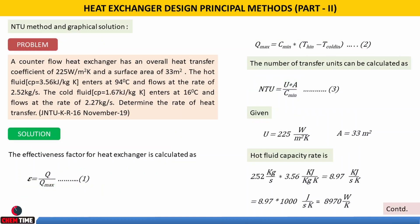Coming to the second problem, based on the NTU (Number of Transfer Units) method. A counter-current flow heat exchanger has an overall heat transfer coefficient of 225 W/m²·K and a surface area of 33 m². The hot fluid has specific heat 3.56 kJ/kg·K, enters at 90°C and flows at 2.52 kg/s. The cold fluid has specific heat 1.67 kJ/kg·K, enters at 16°C and flows at 2.27 kg/s. Determine the rate of heat transfer. This problem is asked in JNTUK R16 November 2019.